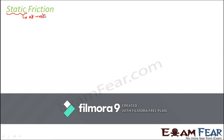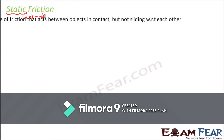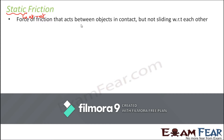When your object is not moving, there is still a force of friction acting on it — that is why the object does not move on its own. A force of friction that acts on objects which are not moving, as long as they are not moving, is called static friction. It is the force of friction that acts between objects in contact but not sliding with respect to each other.